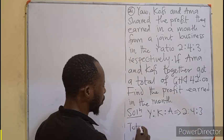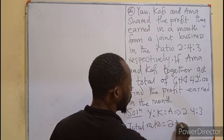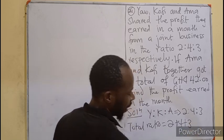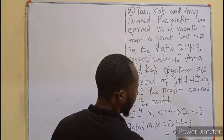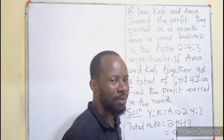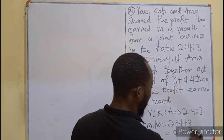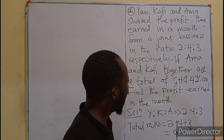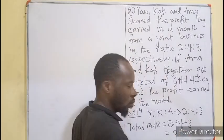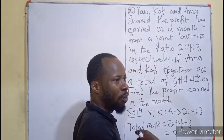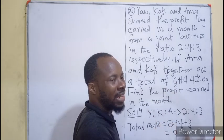The total ratio is 2 plus 4 plus 3, which equals 9. It means the money was divided into 9 parts. Amma is taking 3 parts and Kofi is taking 4 parts, so together the two of them are taking 7 parts.